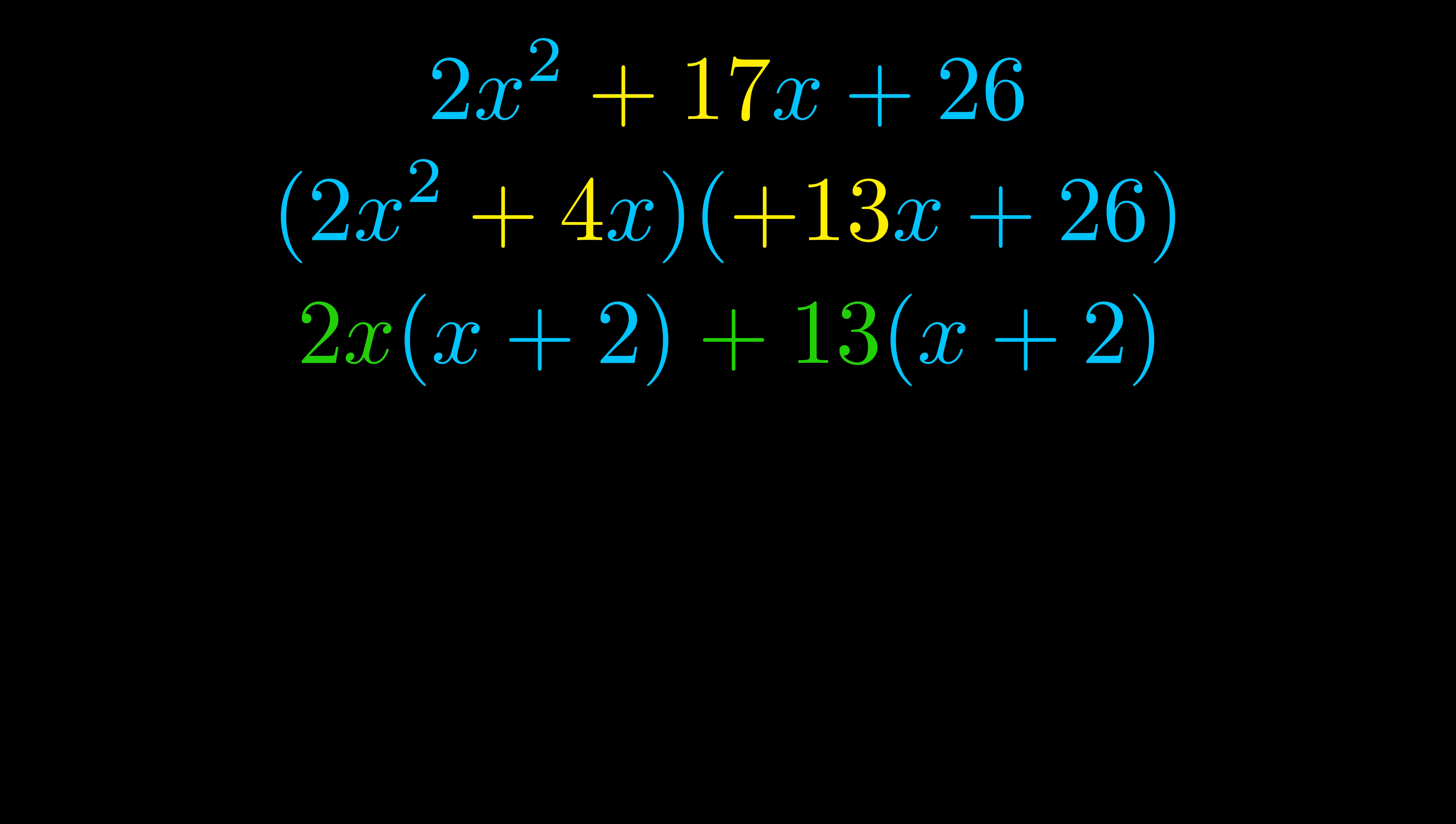Notice also how what remains inside of the parentheses is the same in both cases. The blue values are the same. Those blue values will become one of our factors and we will combine the two green values, the GCFs that we pulled out, to get the other one.